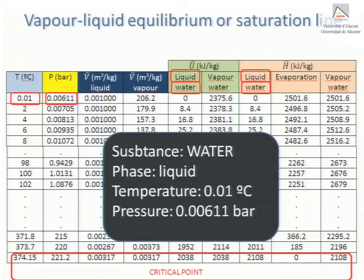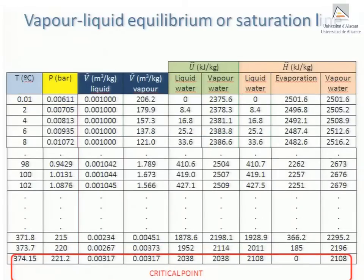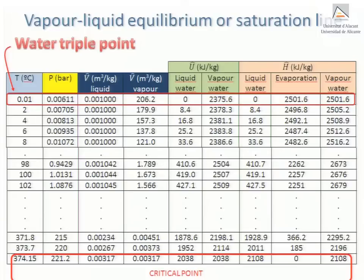This choice of pressure and temperature might seem slightly awkward, since 0.01°C and 0.00611 bar are not round numbers. But they have been chosen as such because these particular values of temperature and pressure correspond to the triple point of water.